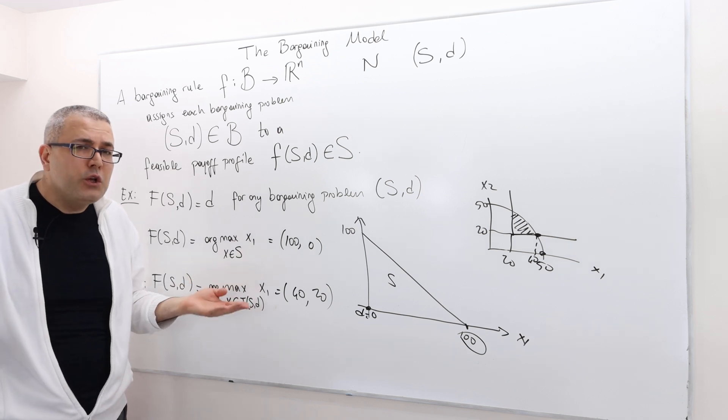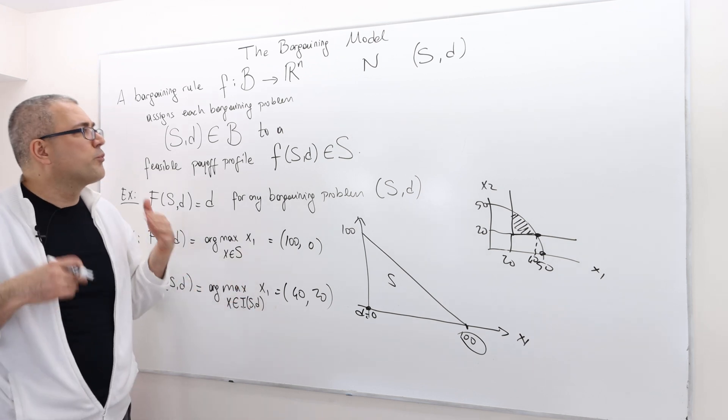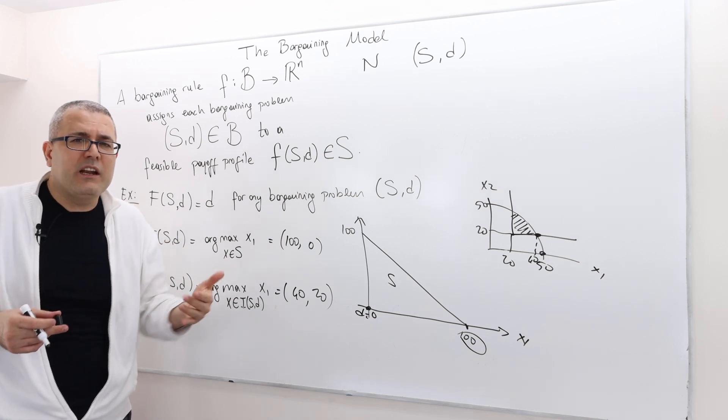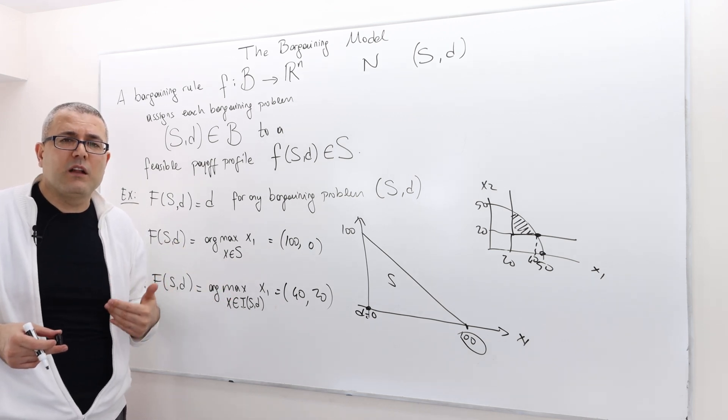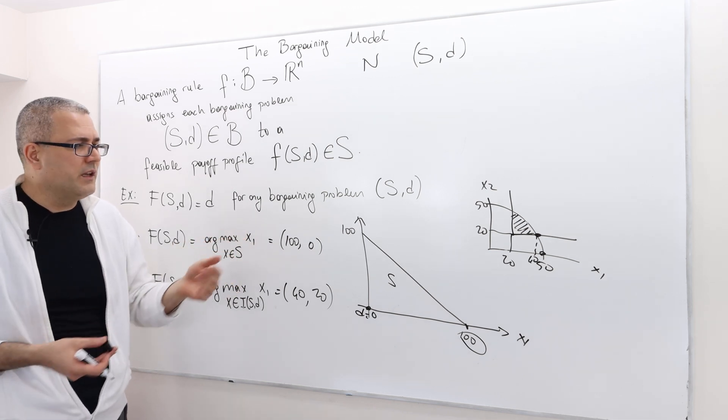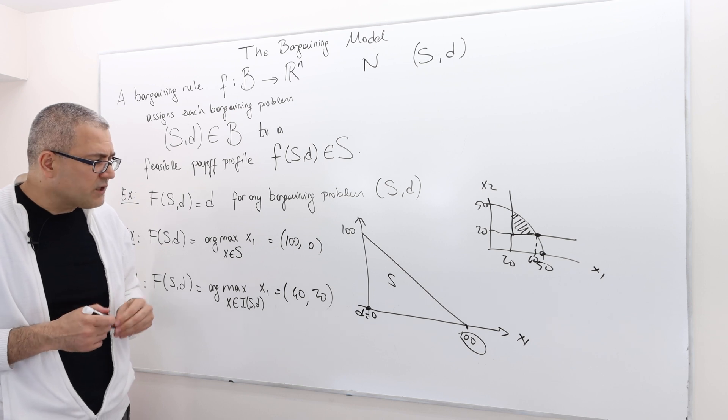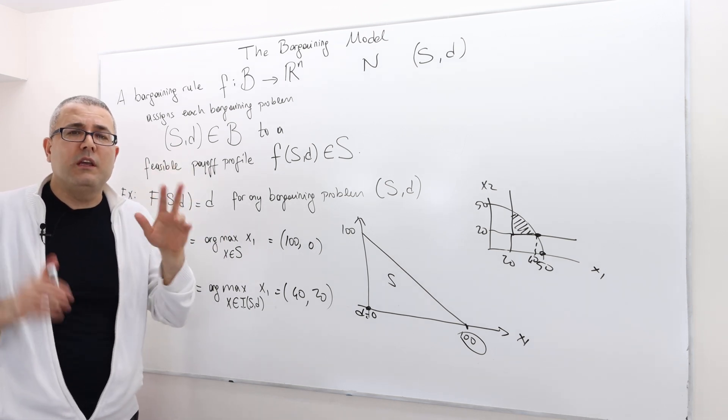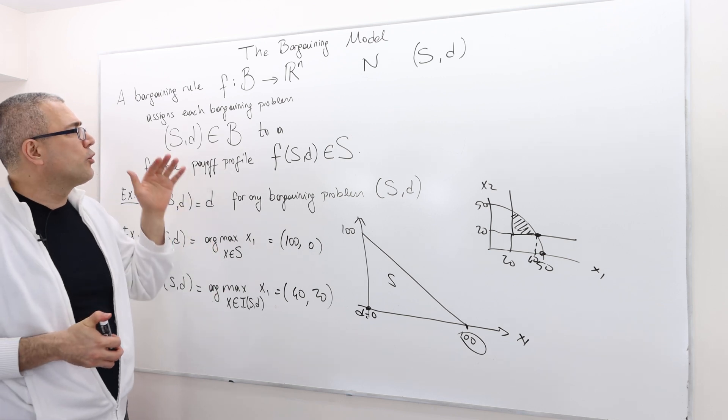Here, it only cares about player one. What about player two though? I mean, why this process is not fair? It doesn't really care about player two. It should care about player two as well because he's also one of the players included in this problem. So therefore, you can bring much more interesting properties that your bargaining rule should satisfy.